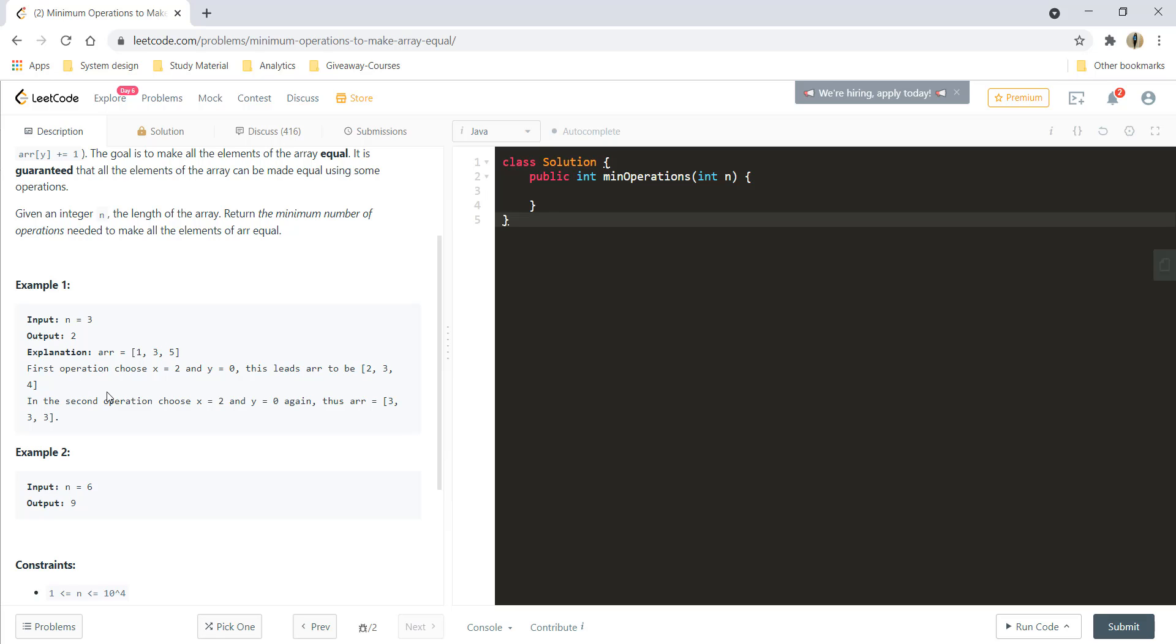In the second operation, I can again do the same thing and make it 3, 3 and 3. So, this makes my array equal in two steps and so my answer is 2.